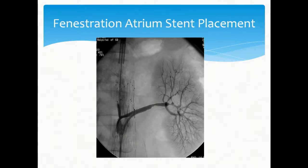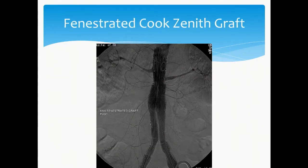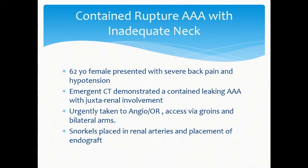Here you see a fenestration — we're placing an Atrium stent graft; this was a Cook device. And here's an example of a fenestrated graft post-intervention, having been able to obtain a seal through a healthier segment of that aorta. That would not have been an option with the conventional devices at the time that patient was treated.